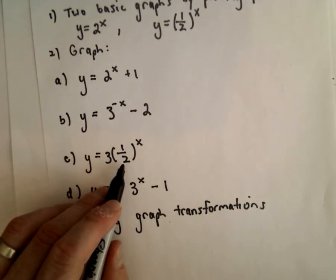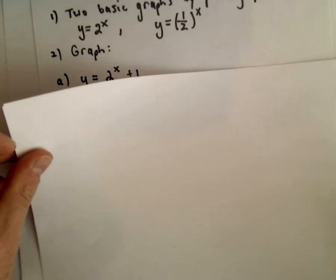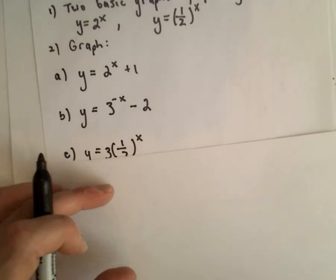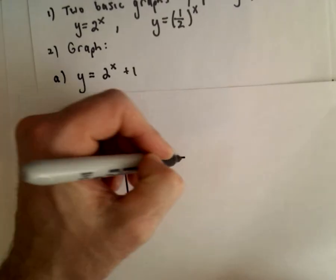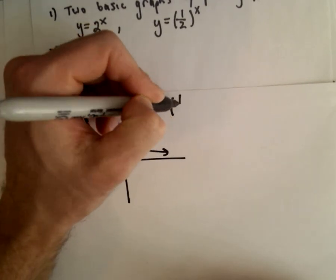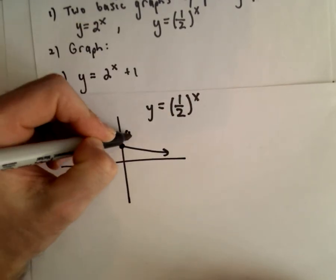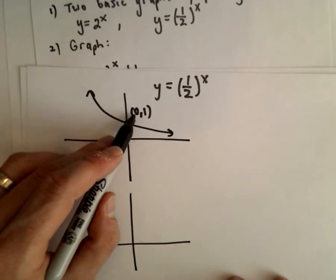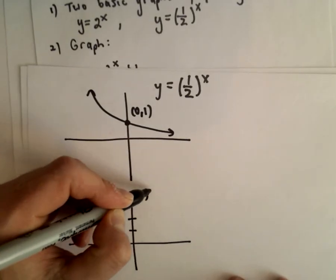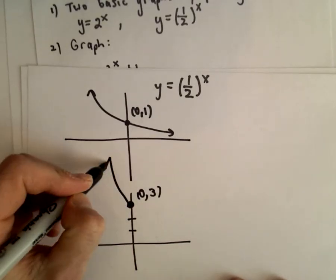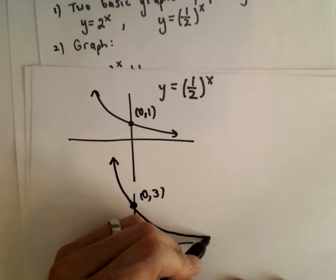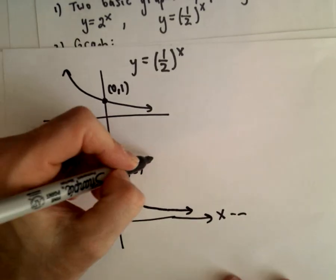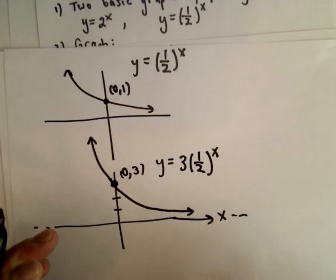For Y equals 3 multiplied by 1 half raised to the X — only 1 half is being raised to the power of X. Multiplying a function by a positive number greater than 1 stretches it vertically by a factor of 3, multiplying all the Y values by 3. So instead of going through (0, 1), the graph will go through (0, 3). It gets steeper even faster, still decreasing, still getting arbitrarily close to the X-axis, so you still have a horizontal asymptote of Y equals 0.